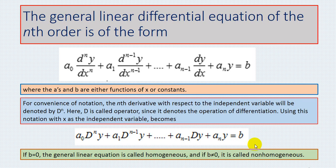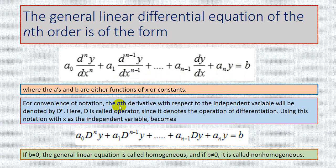The general linear differential equation of the nth order is of the form: a0 times the nth derivative of y over dx to the power of n, plus a1 times the (n-1)th derivative of y, and so on, plus an times y, equals b. Here, a's and b are functions of x or constants. For convenience of notation, the nth derivative with respect to the independent variable will be denoted by D^n.